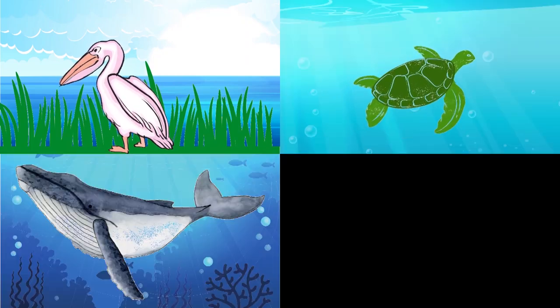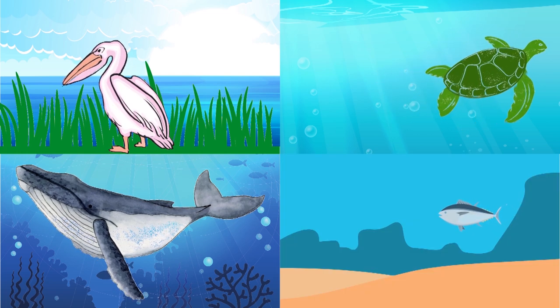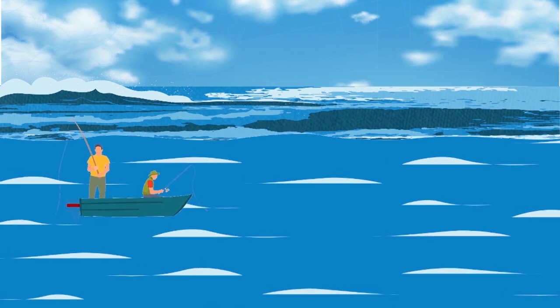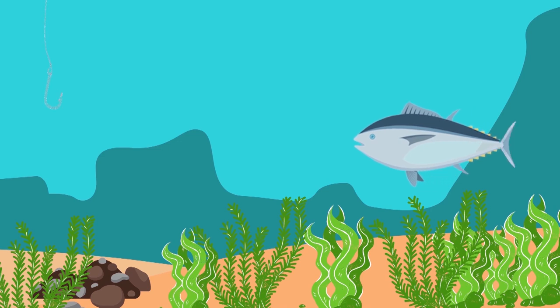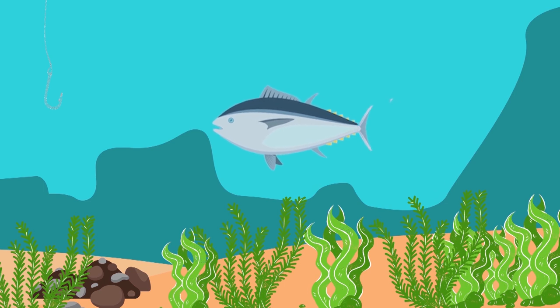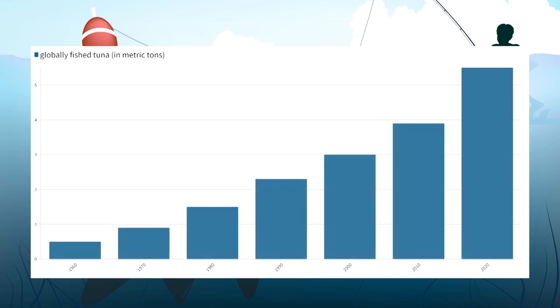But why is there an overpopulation? The predators of the jellyfish are sea birds, sea turtles, marine mammals and fish, especially tuna and swordfish. But in the last 60 years, tuna fish became more and more popular as food around the world. Today tuna is clearly overfished and hence one main predator of the jellyfish is no longer around. The same is currently starting to happen with the swordfish.